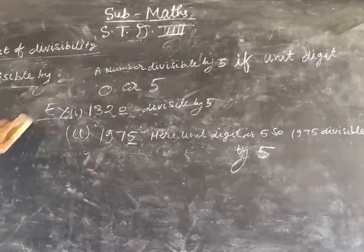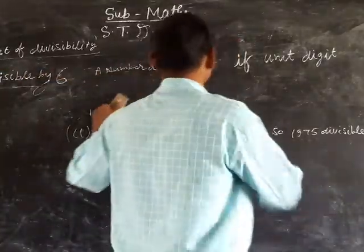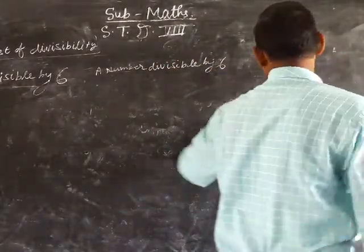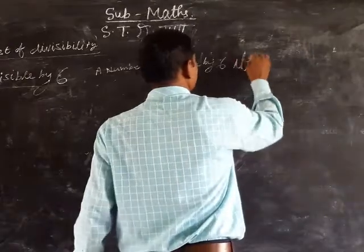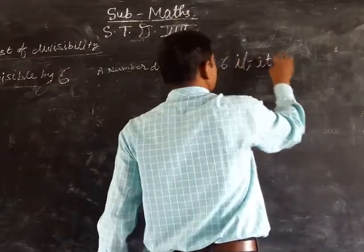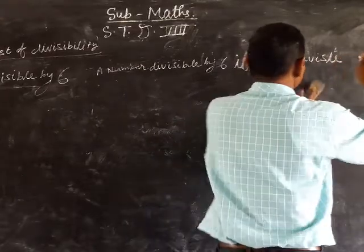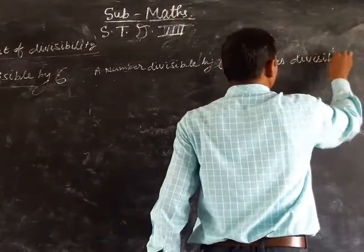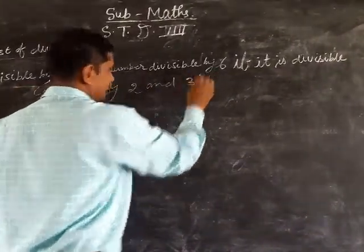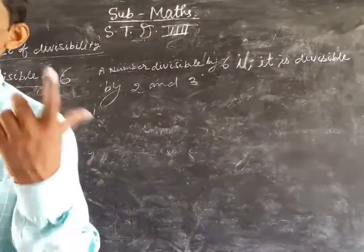Let's do divisible by 6. A number is divisible by 6 if it is divisible by both 2 and 3. If it is divisible by 2 and 3, then it is divisible by 6.